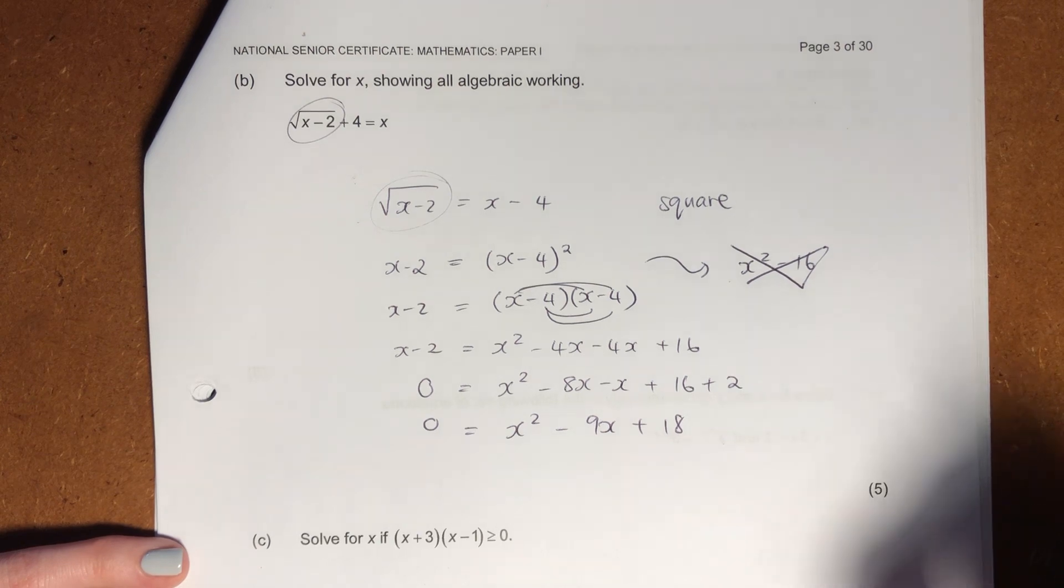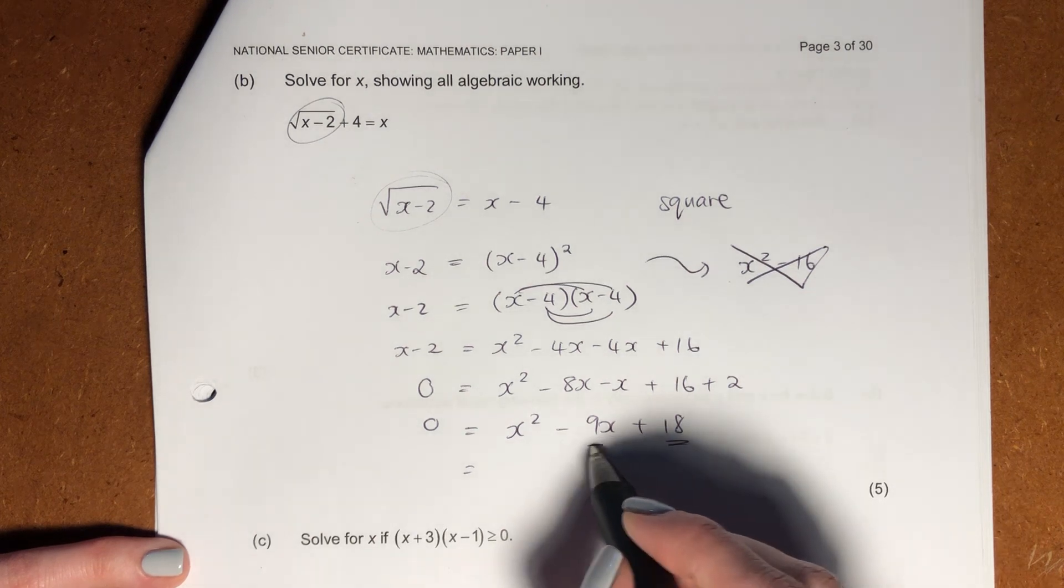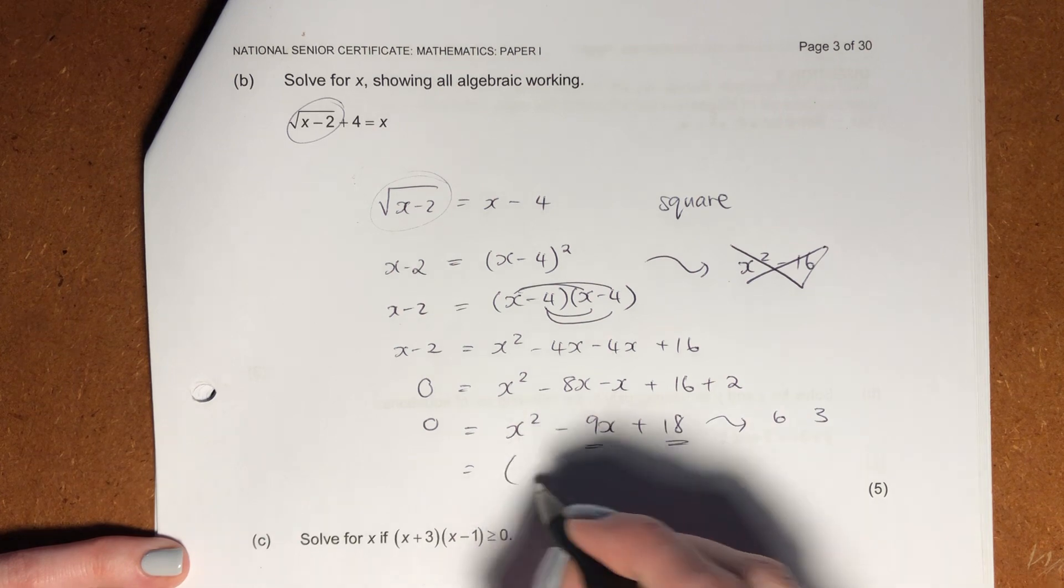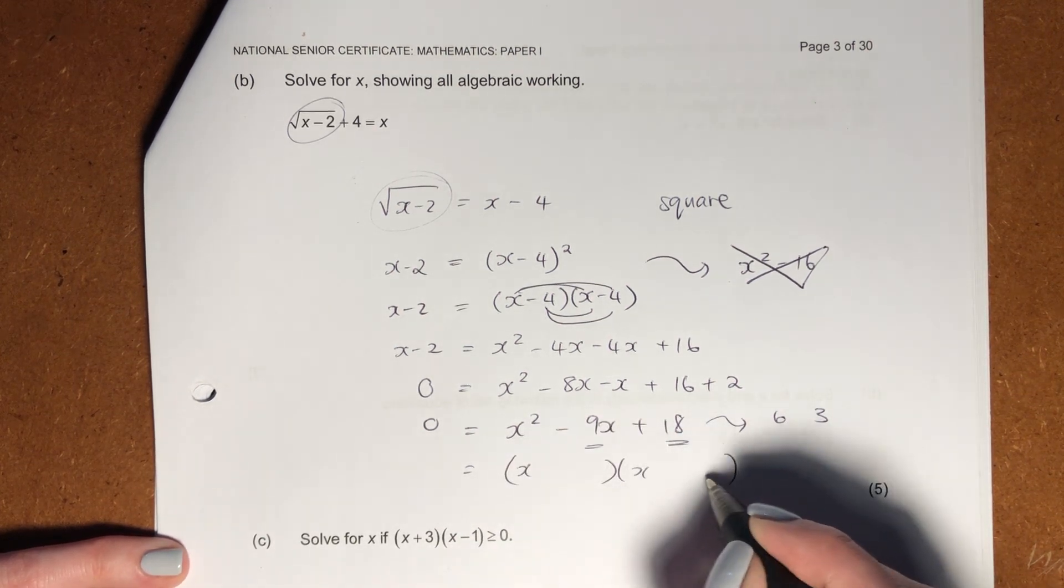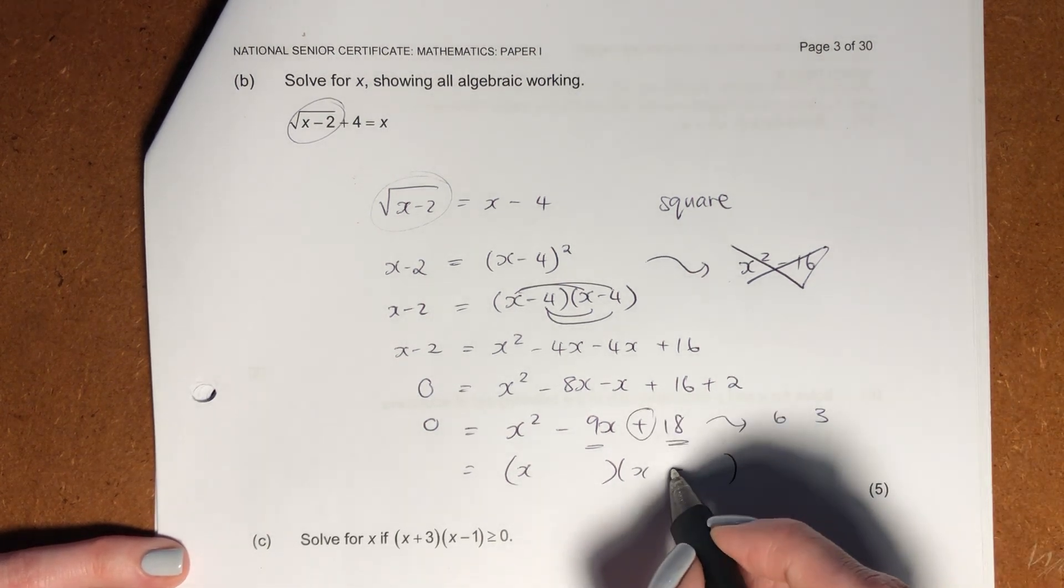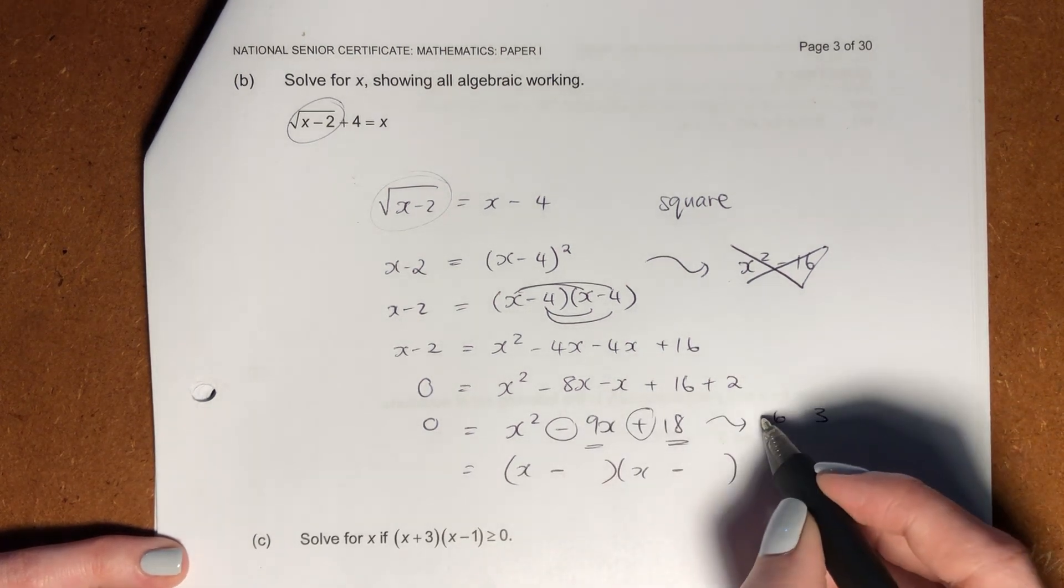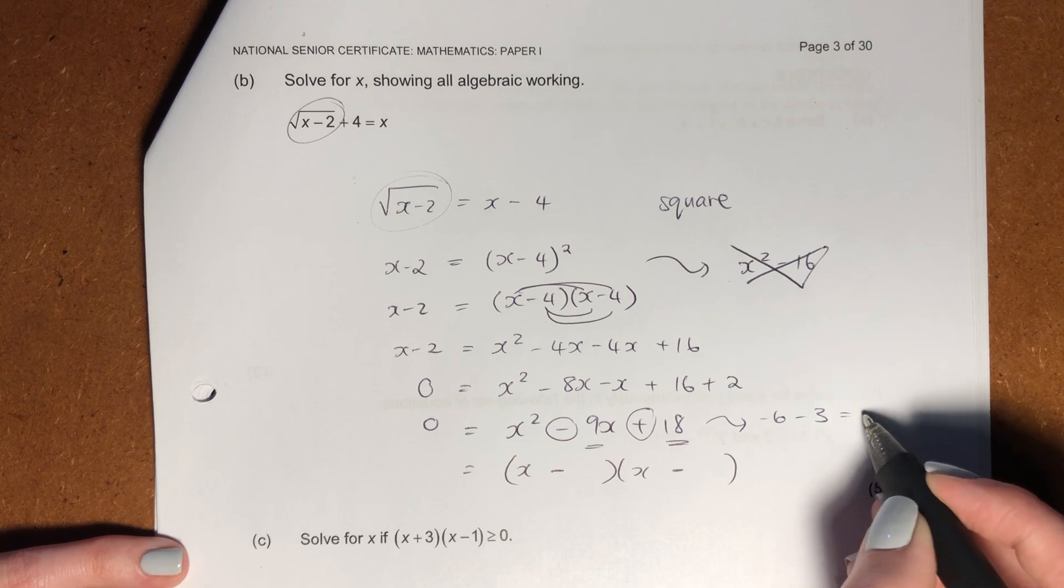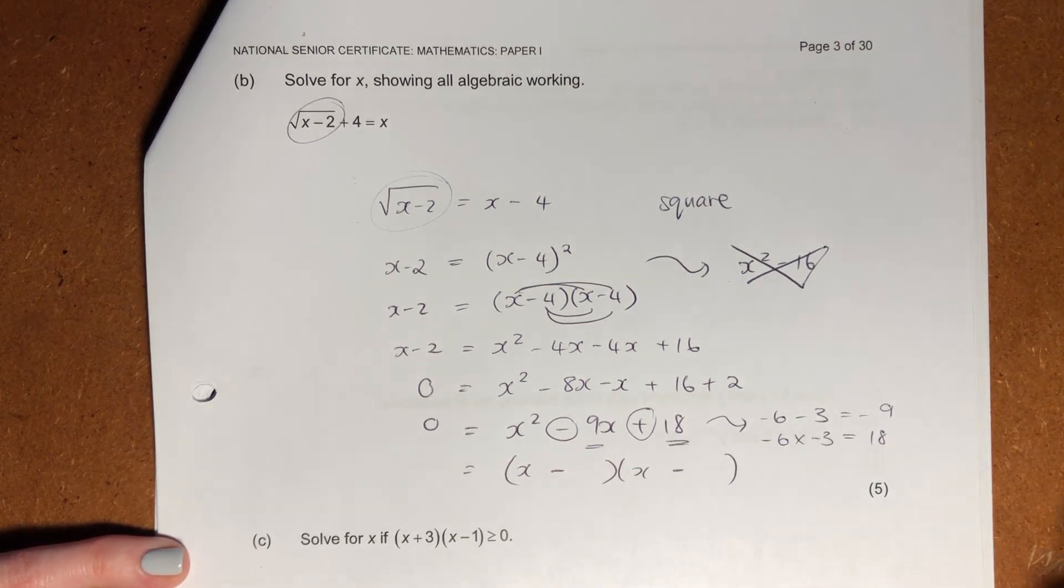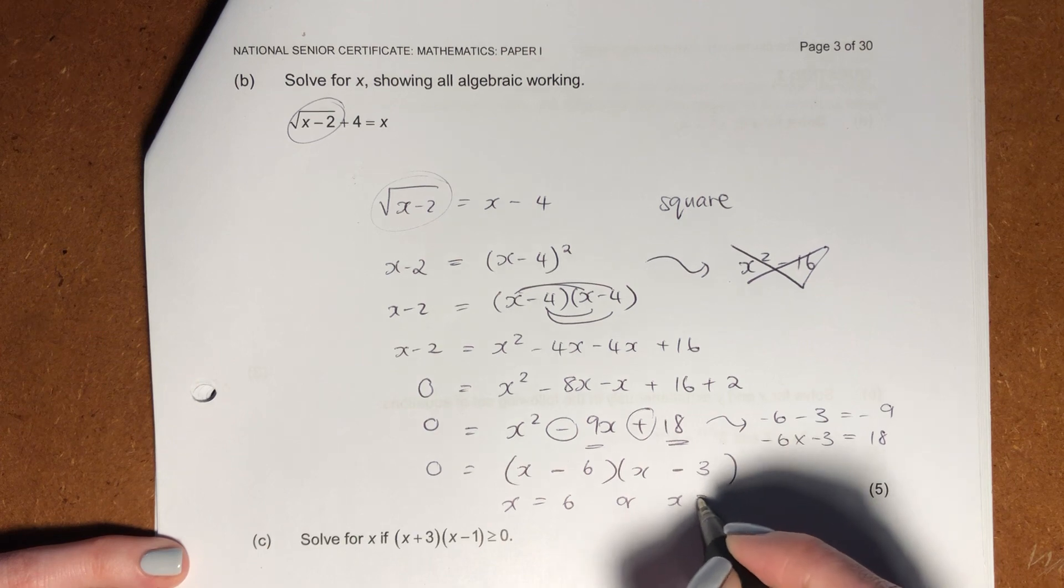You can just put this into your calculator, but you should be able to do this in your head. You say, what are my factors of my last term that will get me to 9? I'm going to think of 6 and 3. So I'm going to open my brackets. You always put your x's in there. We know that we want to get to a plus here, so we know that this has to be negative and negative, because this has to be a negative there, because we know negative 6 minus 3 gives me negative 9. Negative 6 times negative 3 gives me 18, which is what I want. So I'm going to put 6 and I'm going to put 3. So x can either equal 6 or x can equal 3.